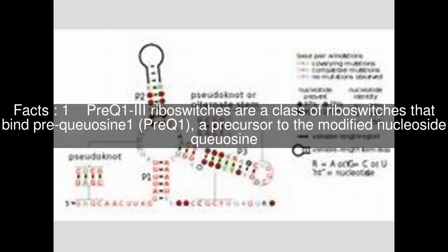PreQ1-3 riboswitches are a class of riboswitches that bind PreQ1, a precursor to the modified nucleoside Q1.